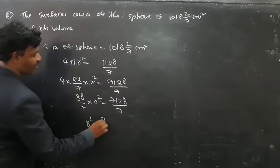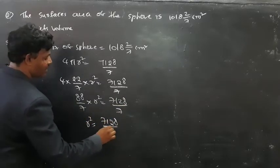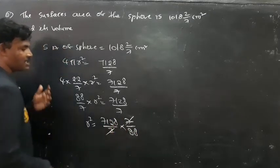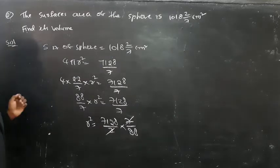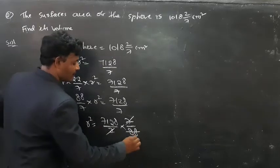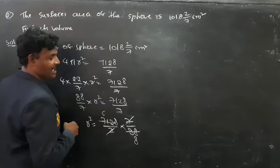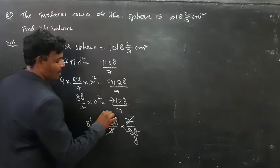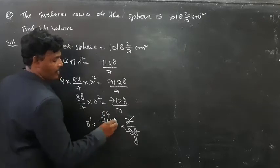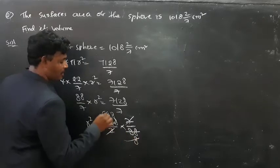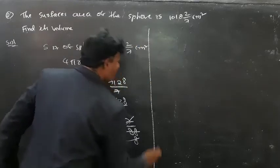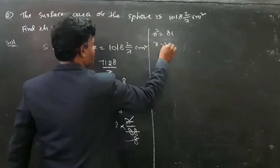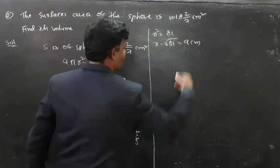Now r² = (7128/7) × (7/88). The 7s cancel. Taking the division table: 88 divides into 7128 giving 81. So r² = 81, and therefore r = √81 = 9 centimetres.